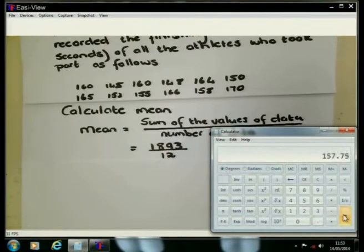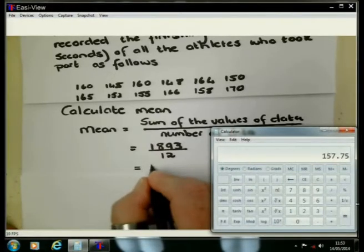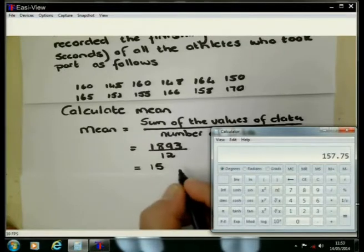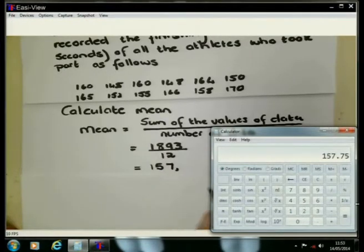So if I now divide by 12, you will see that I have an answer of 157.75. Now remember to always check in the instructions of your paper, up to how many decimal places an answer must be given. And in general, the instruction is up to two decimal numbers unless we say something specifically in a question.